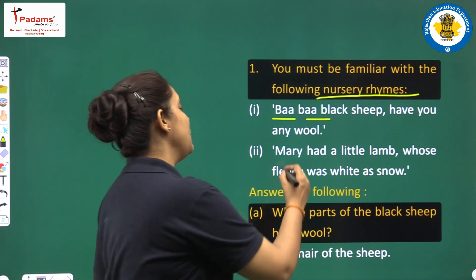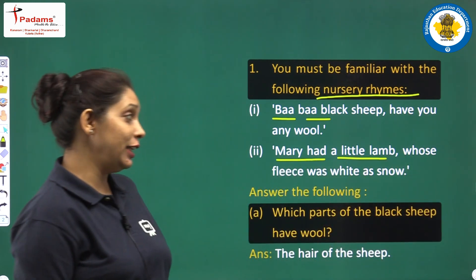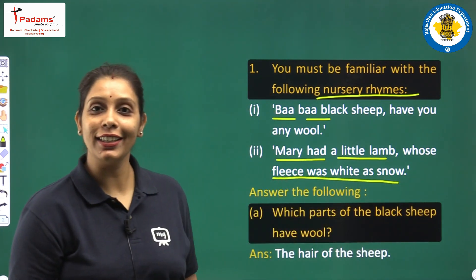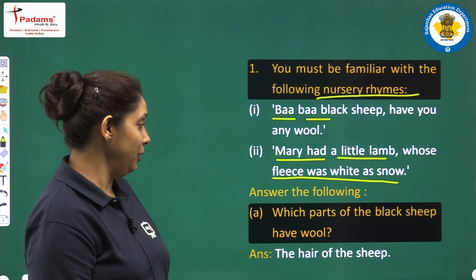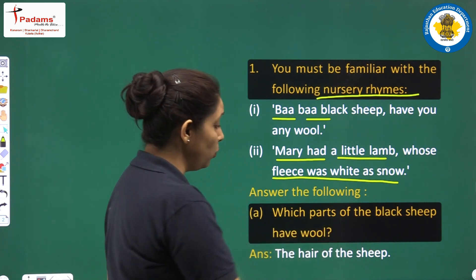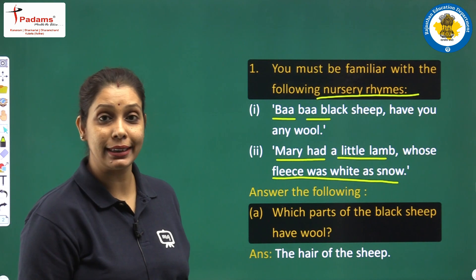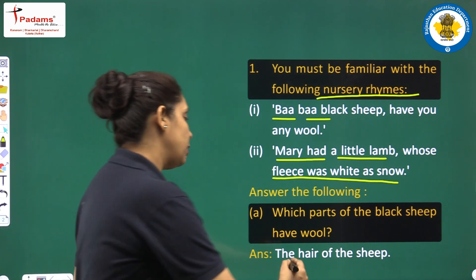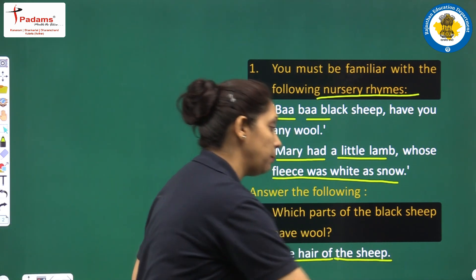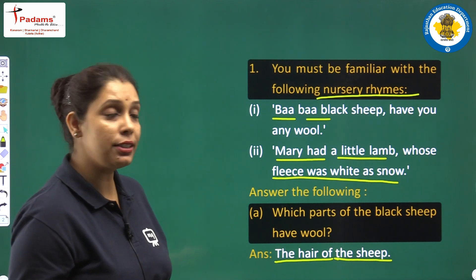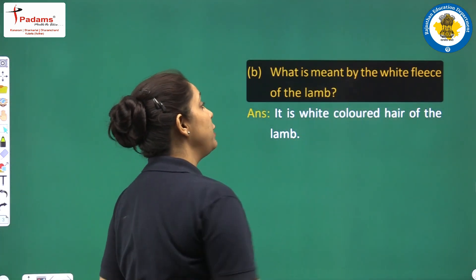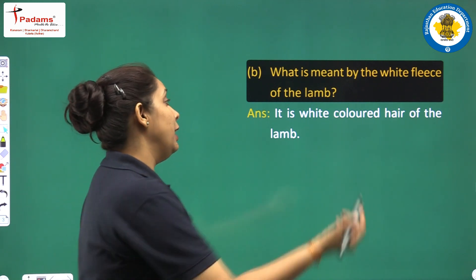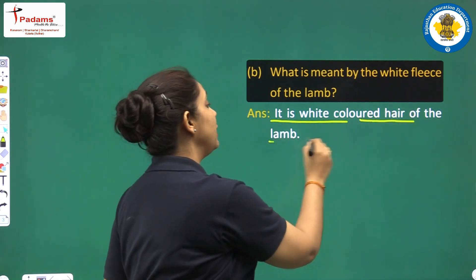The second nursery rhyme is 'Mary had a little lamb whose fleece was white as snow.' Now, which part of the black sheep has wool? Everybody knows — it is the fleece, the hairs. So we can write: the hair of the sheep. And what is meant by the white fleece of the lamb? It is the white colored hair of the lamb.